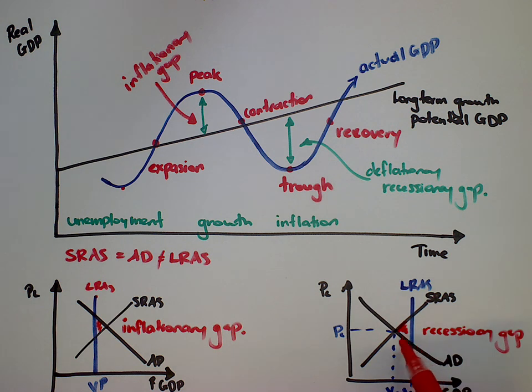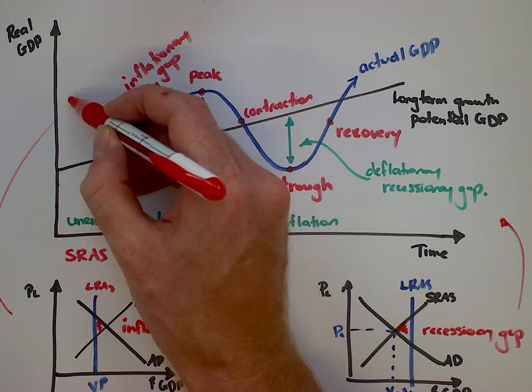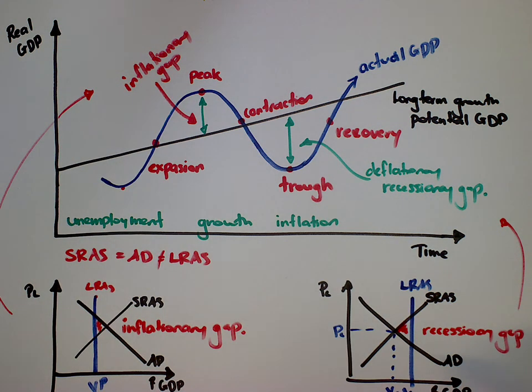Some people aren't working, some bits of land are being underutilized, and there's less pressure on the price level, and the price level will tend to fall. So this recessionary gap links up to this idea up here, and inflationary gaps link up to the concept up there.